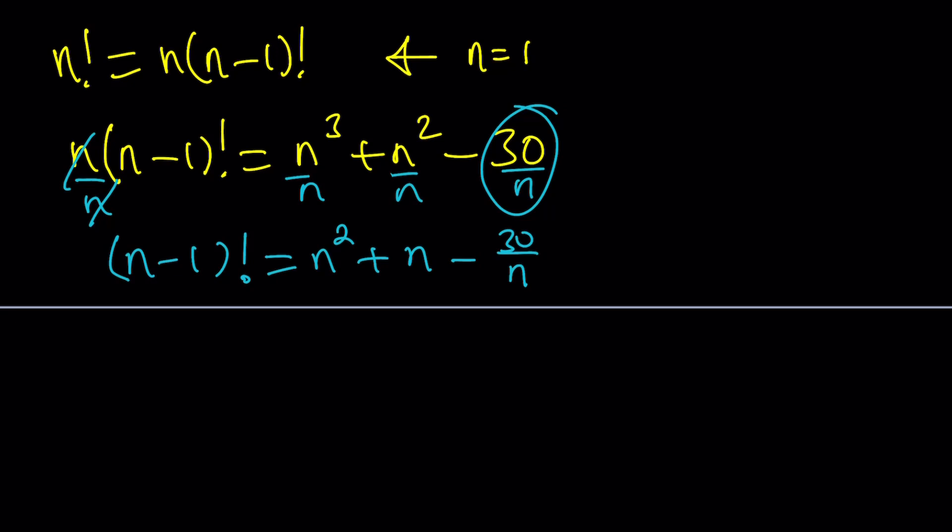Since n needs to be a non-negative integer, 30 over n needs to be an integer. So n needs to divide 30. 30 has so many divisors. What are they? 1 is a divisor, 2 is a divisor, 3 is a divisor, 4 doesn't go, 5 goes, 6 goes, 10 goes, 15 goes, and 30 goes.